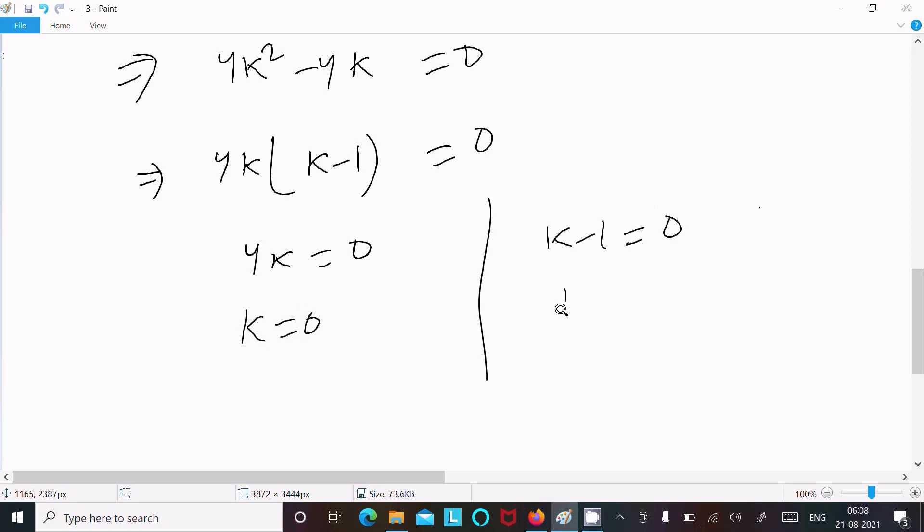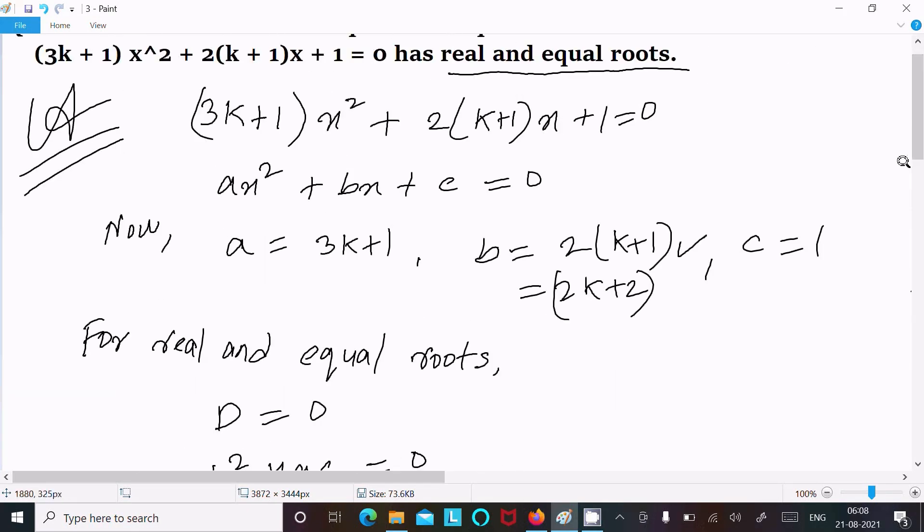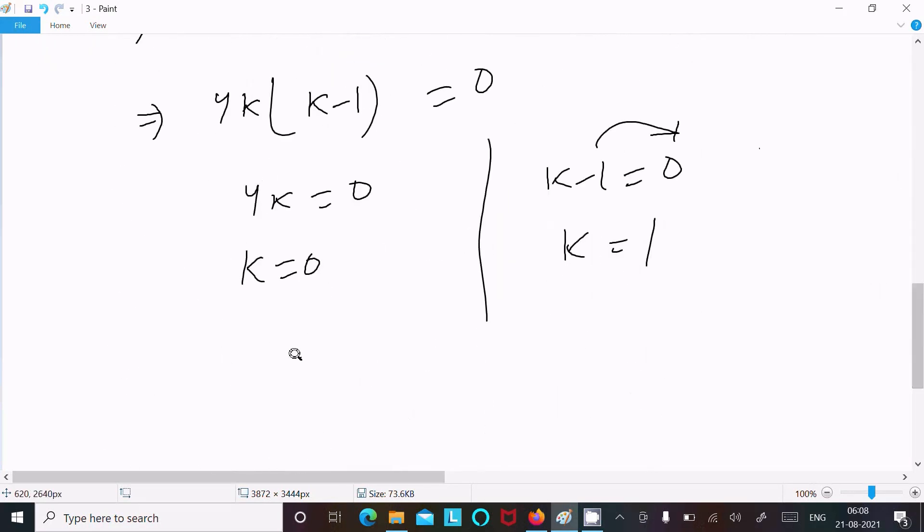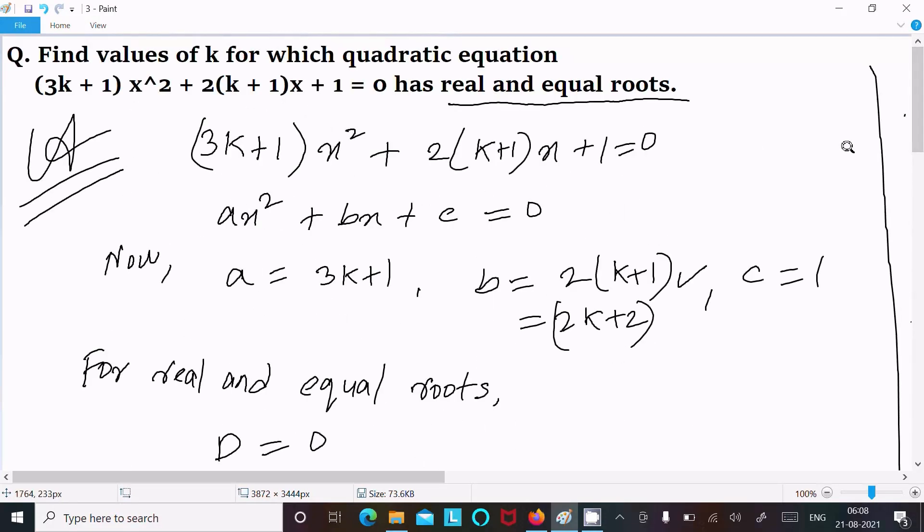So k = 0 and k = 1. So this is the answer of this quadratic equation: k = 0 and 1. So find the value of k, k is now 0 and 1. This is the way we can find the value.